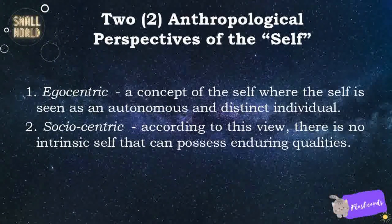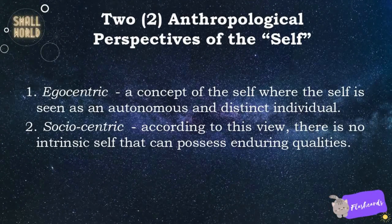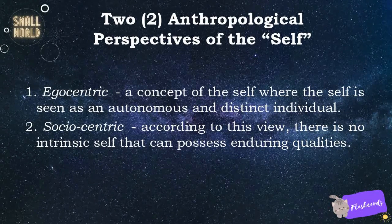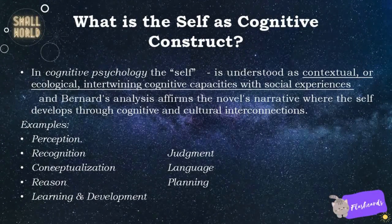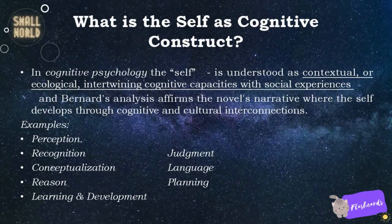Anthropological perspectives of the self include: 1. Egocentric — a concept of the self where the self is seen as an autonomous and distinct individual. 2. Sociocentric — according to this view, there is no intrinsic self that can possess enduring qualities. The self as cognitive construct: in cognitive psychology, the self is understood as contextual or ecological, intertwining cognitive capacities with social experiences.